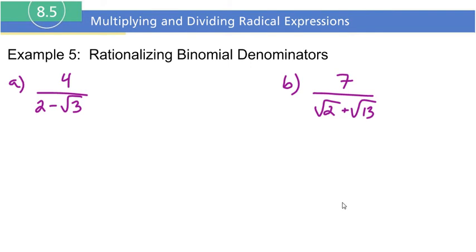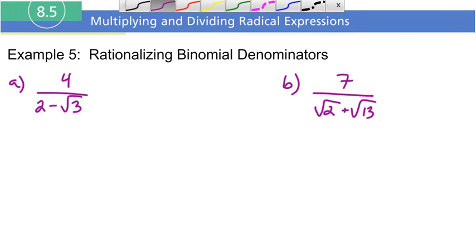Let's go on now to rationalizing binomial denominators. What we want to do is once again get rid of the radical in the denominator. However, it's not just the radical by itself — it's now going to be attached with another term. Since it's two terms, we call those binomials, so we want to rationalize binomial denominators.